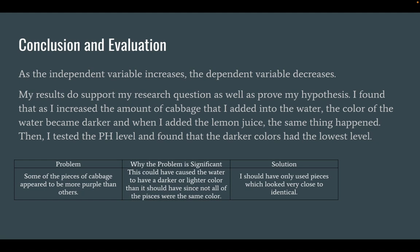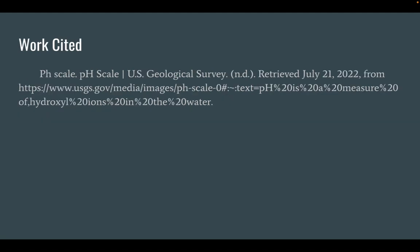One problem I ran into: some pieces of cabbage appeared to be more purple than others. This could have been significant because it could have caused the water to have a darker or lighter color than it should have, since not all the pieces were the same color. The solution would have been to only use pieces which looked very close to identical by inspecting all sides of the cabbage before use. The background information was gathered from a lecture from my teacher.